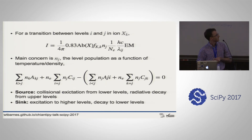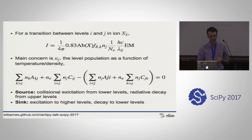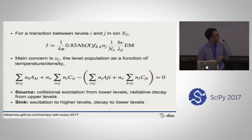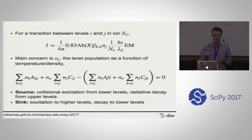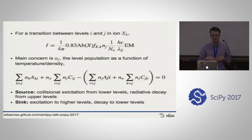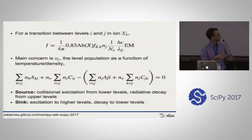The primary thing we care about is calculating the intensity. The key quantity is N sub J, the level population, which tells how populated a particular energy level is as a function of temperature and density. You solve it using an equation that involves a matrix inversion, and unfortunately the matrix dimensions are the number of energy levels squared - for ions with 900 energy levels this becomes quite a challenge. The sources for the populations are collisional excitation and radiative decay, all pulled in from the Chianti database.